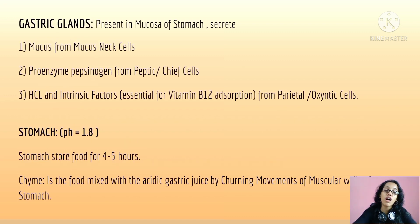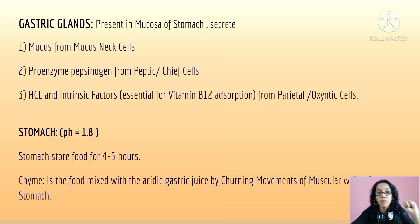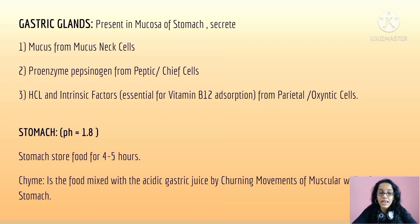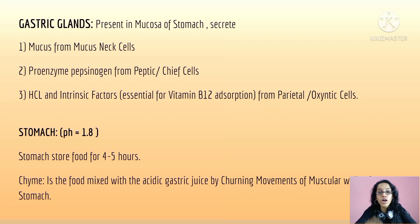The gastric glands are present in the mucosa of the stomach and secrete: first, mucus from the mucus neck cells; second, the pro-enzyme pepsinogen from the peptic or chief cells; and third, HCl and intrinsic factors essential for vitamin B12 absorption, secreted from the parietal or oxyntic cells of the gastric glands. The stomach has a pH of 1.8.